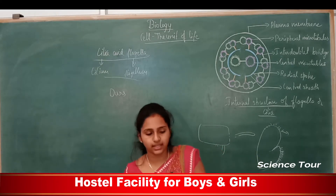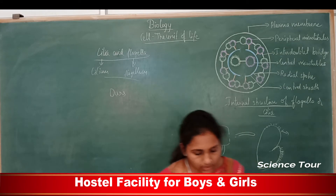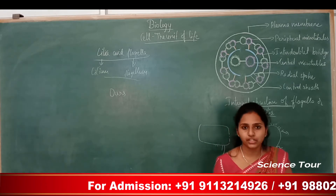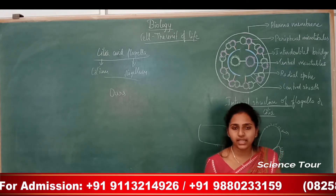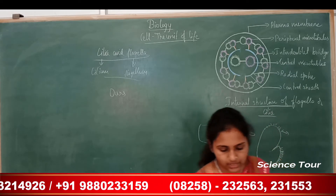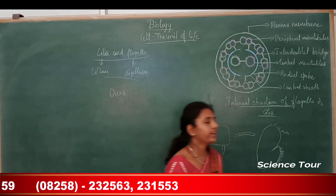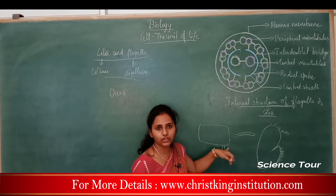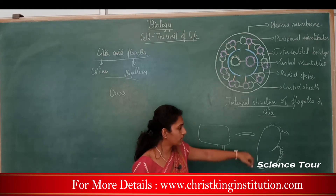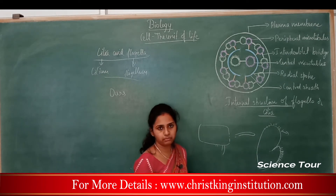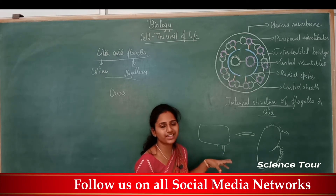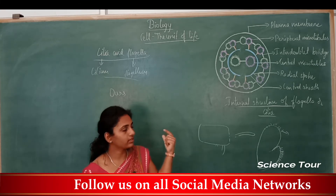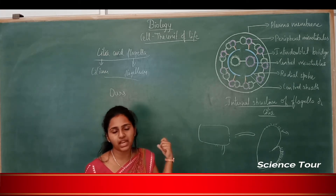Cilia are comparatively smaller and shorter, while flagella are comparatively longer. Both are responsible for cell locomotion and motility. Flagella either move the entire cell or move the fluid around the cell.